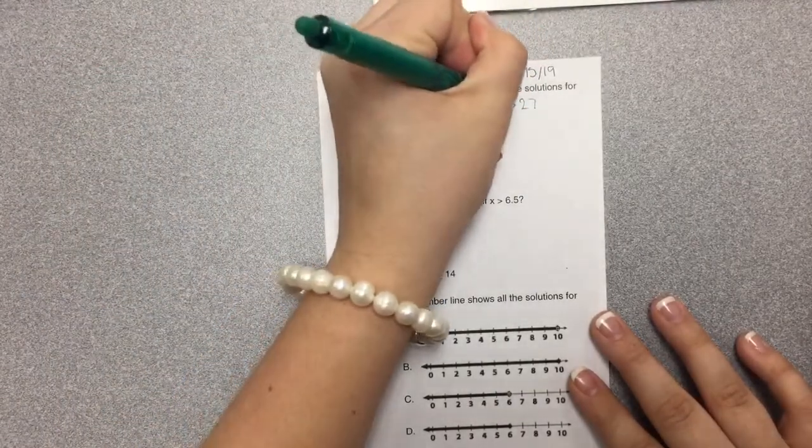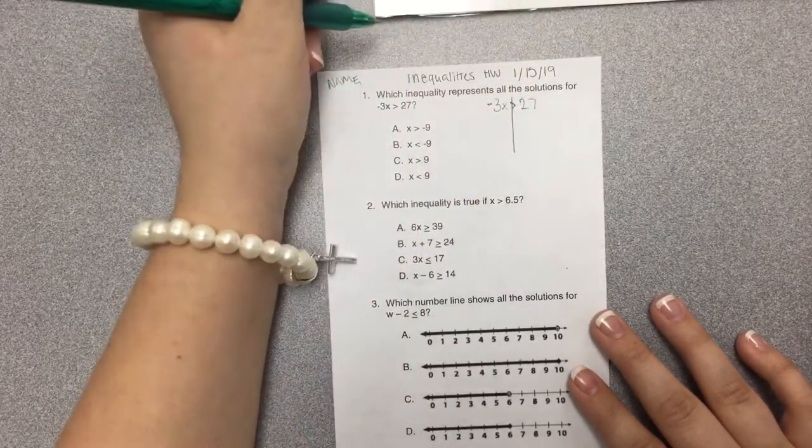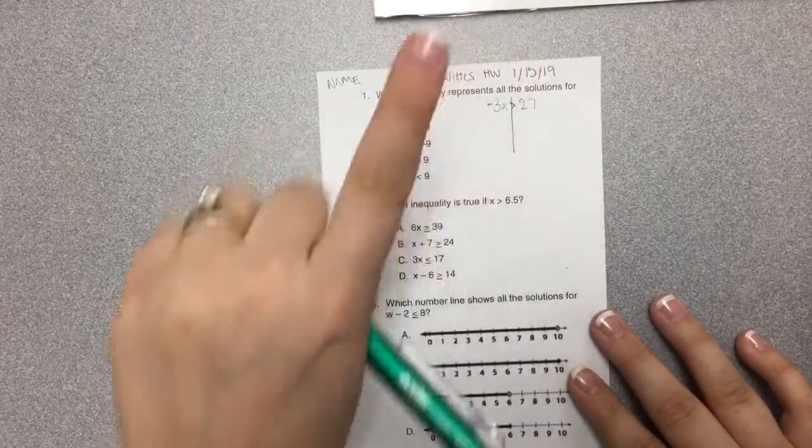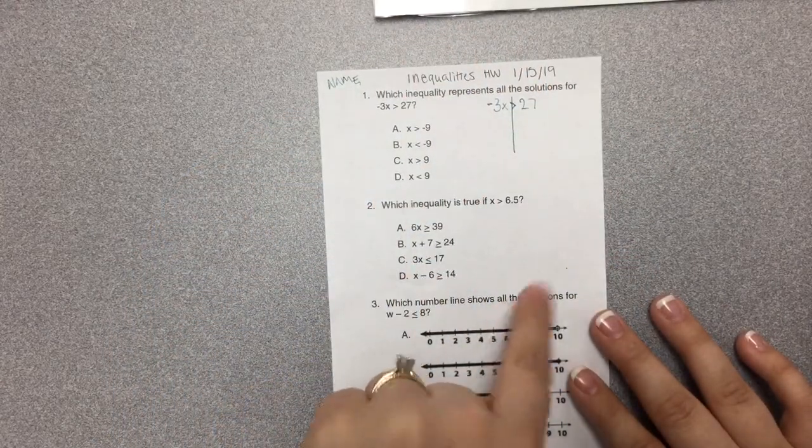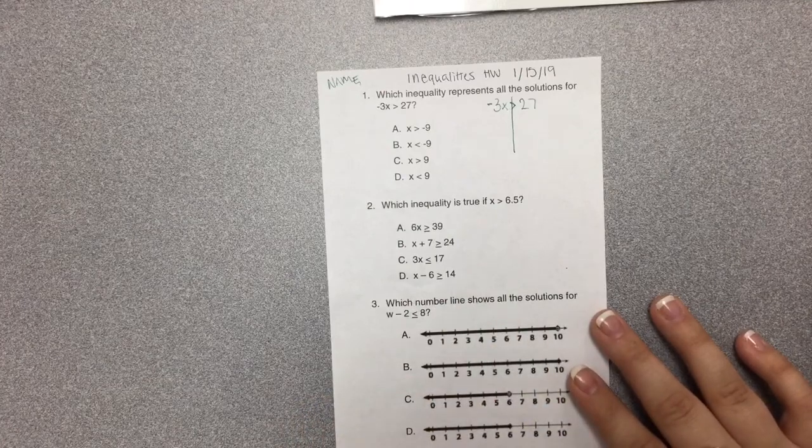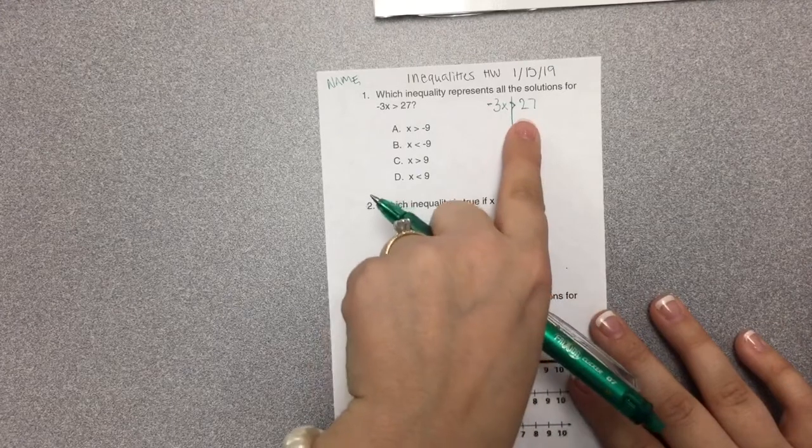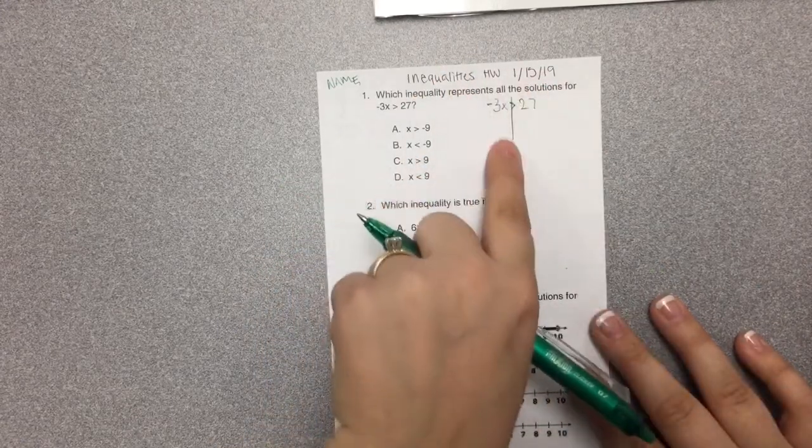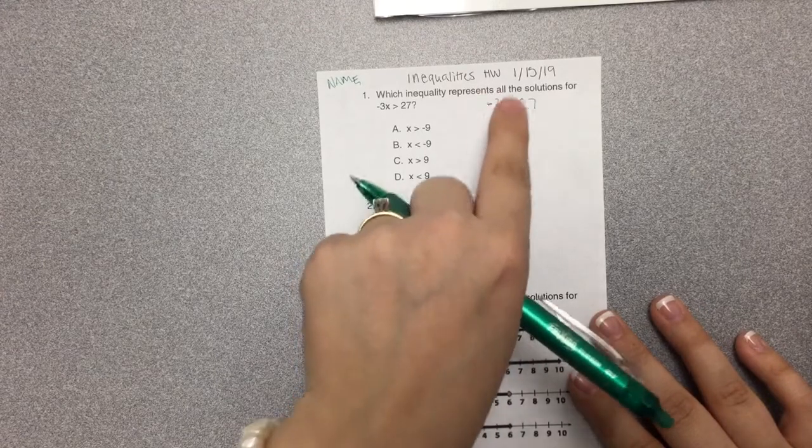First I'm going to draw my line. Then I'm going to think about my flip-flop rule. If I multiply or divide by a negative, I need to flip the sign, meaning instead of greater than I would have less than. Looking at my variable, I'm seeing the coefficient is negative.